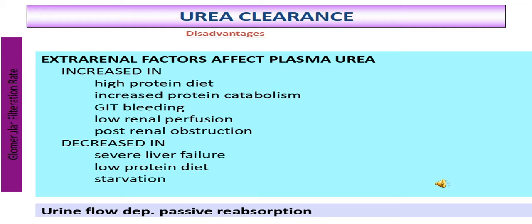Procedure: Allow the patient to have a normal breakfast. At 9 am, give a cup of water and the patient is instructed to void the bladder; the urine is discarded. At 10 am the bladder is completely emptied, the volume of urine is measured, and urine urea is estimated. A blood sample is taken and blood urea is also estimated. From these values we can calculate the urea clearance using the equation: Clearance = (U × V) / P, where U is milligrams of urea per ml of urine, P is milligrams of urea per ml of plasma, and V is ml of urine excreted per minute.